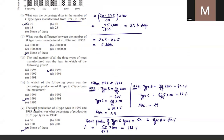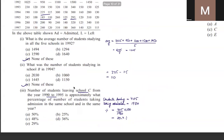The last question on this graph asks: total production of C-type tires in 1992 and 1993 together is what percentage of B-type tires in 1994? Sum up C-type for those two years — total is 50. B-type in 1994 is 27.5. Calculating the percentage gives 181%, which is again not listed in the options.